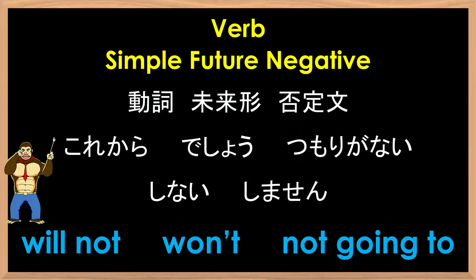Welcome to another grammar lesson brought to you by eBankya.com and Genki Kids A-Kaiwa. In this lesson, we will cover verb simple future negative: will not, won't, and not going to.